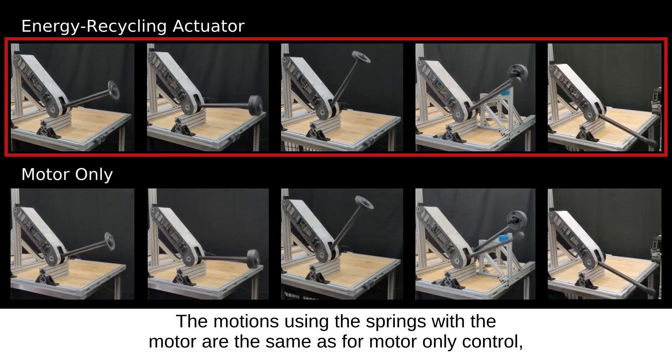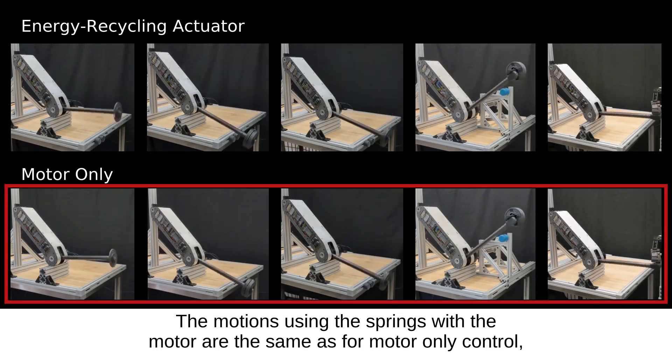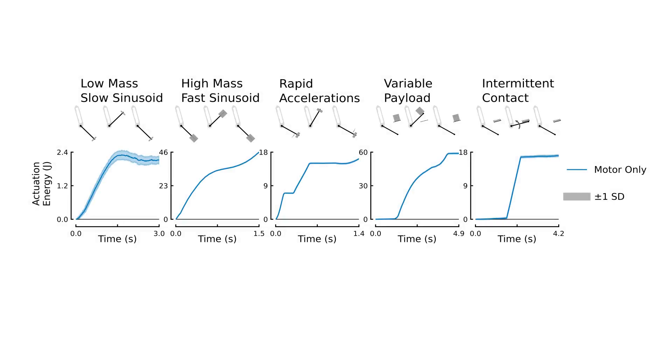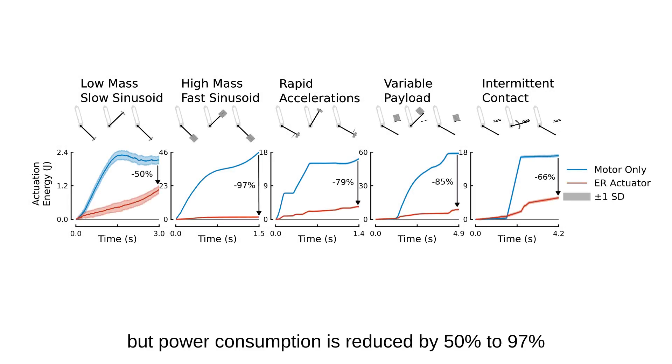The motions using the springs with the motor are the same as for motor-only control, but power consumption is reduced by 50 to 97%.